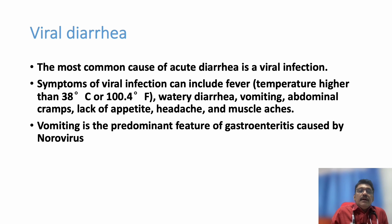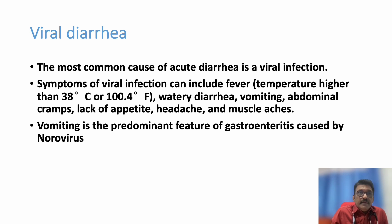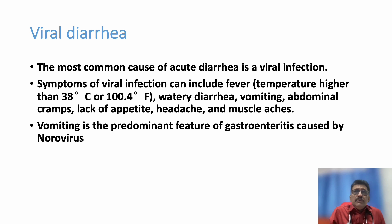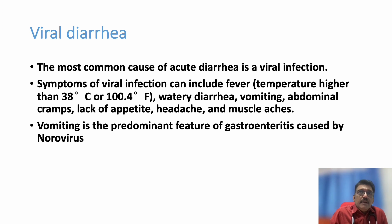The most common cause for acute diarrhea is always viral infection, especially in children. Symptoms of viral infection are like any other viral fever: the patient can have upper respiratory tract infection-like symptoms, abdominal pain, loose stools, vomiting, cramps, reduced appetite, headache, and muscle aches. Most viral fevers can also have diarrhea — some viruses are primarily diarrheogenic, meaning they mainly produce diarrhea along with other features.